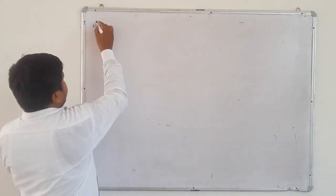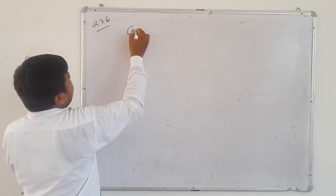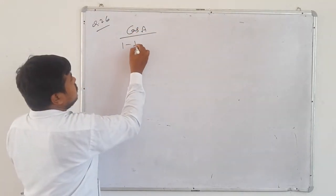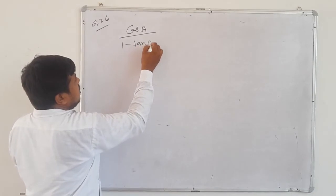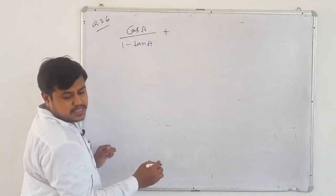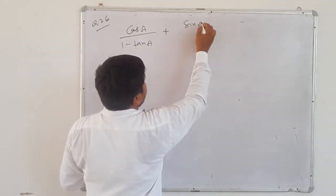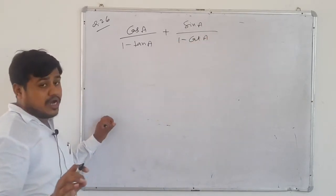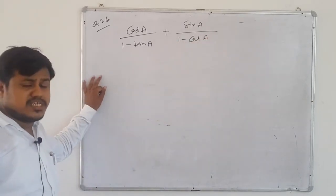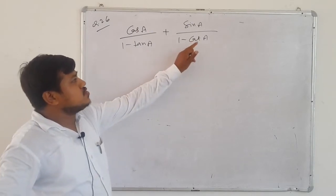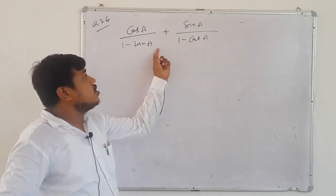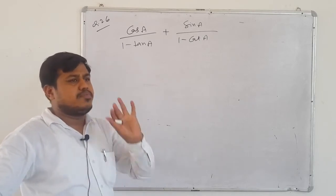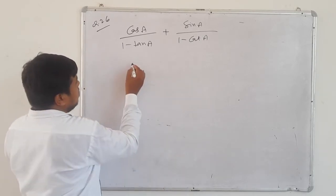Question 26: cos A/(1 - tan A) + sin A/(1 - cot A). You can do this question by changing everything to sin/cos, or by changing only cot to tan — the denominator will become the same and you can take LCM either way.